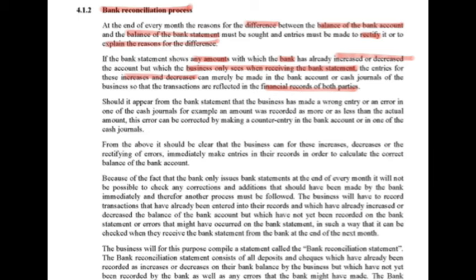Should it appear from the bank statement that the business has made a wrong entry or an error in one of the cash journals — for example, an amount was recorded as more or less than the actual amount — the error can be corrected by making a counter-entry in the bank account or in one of the cash journals.